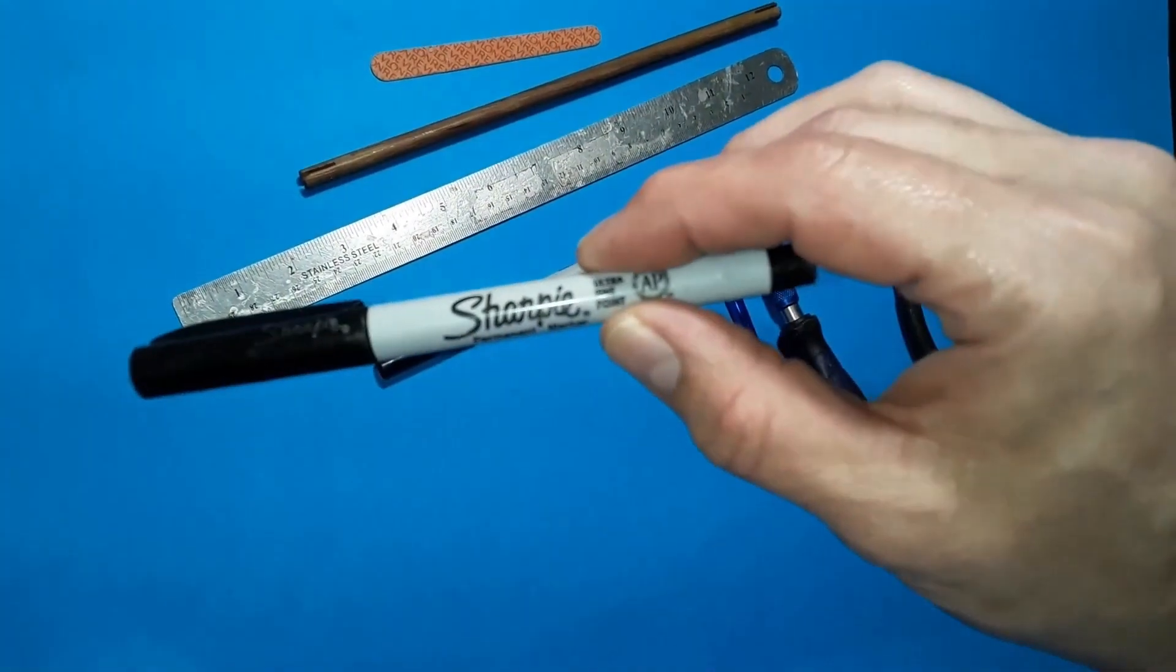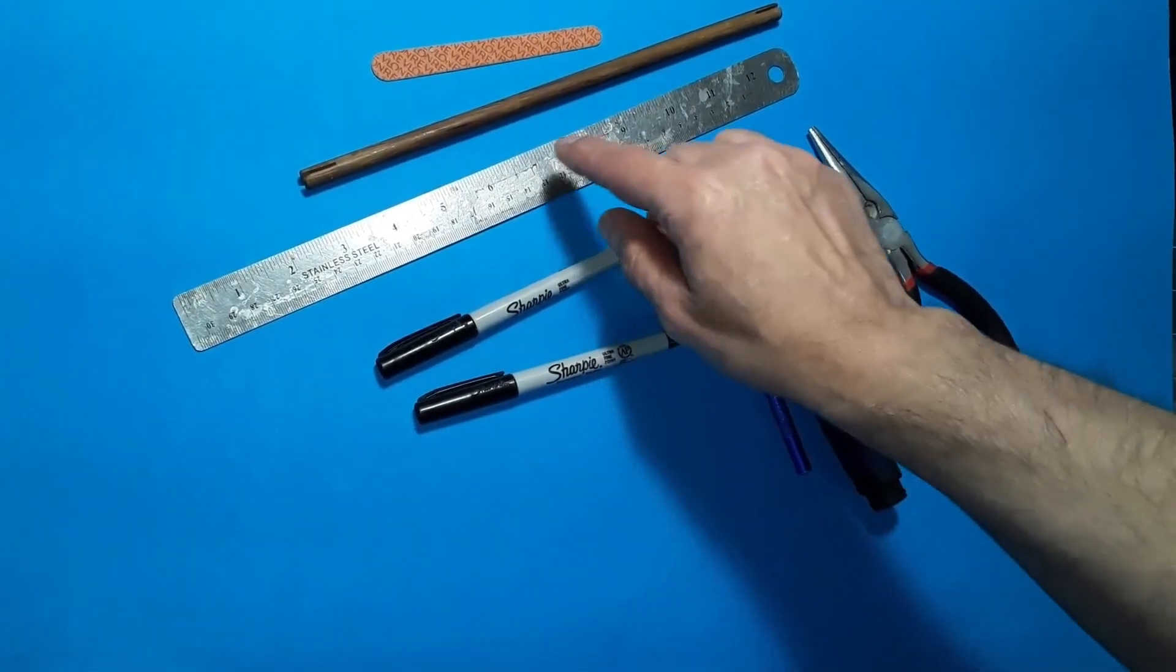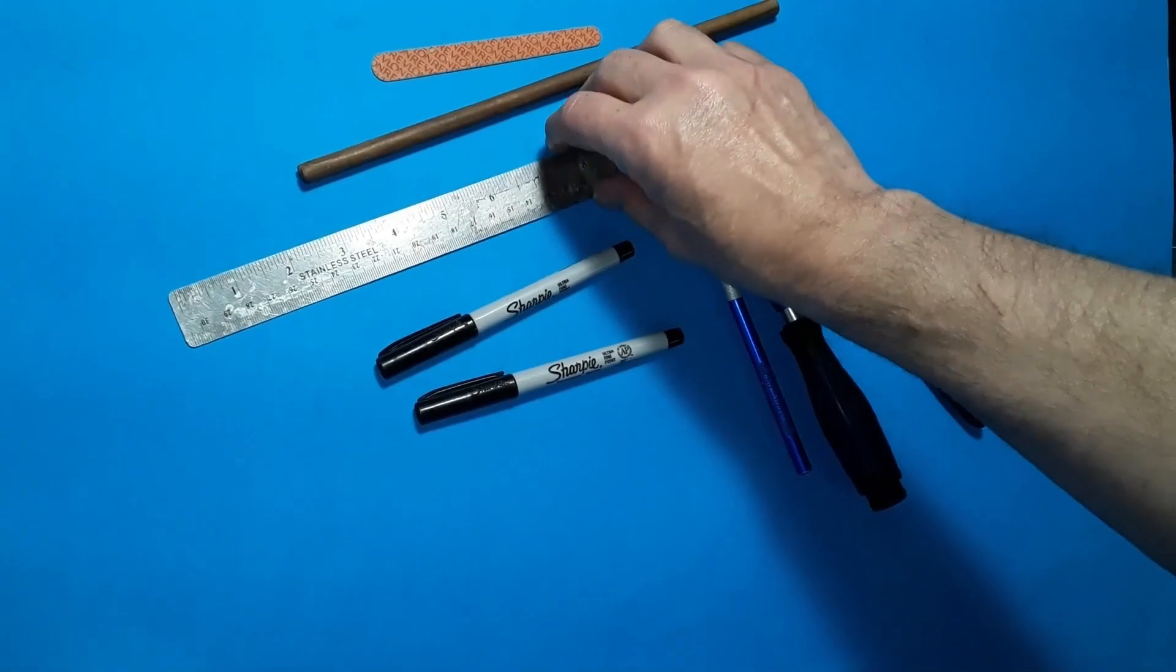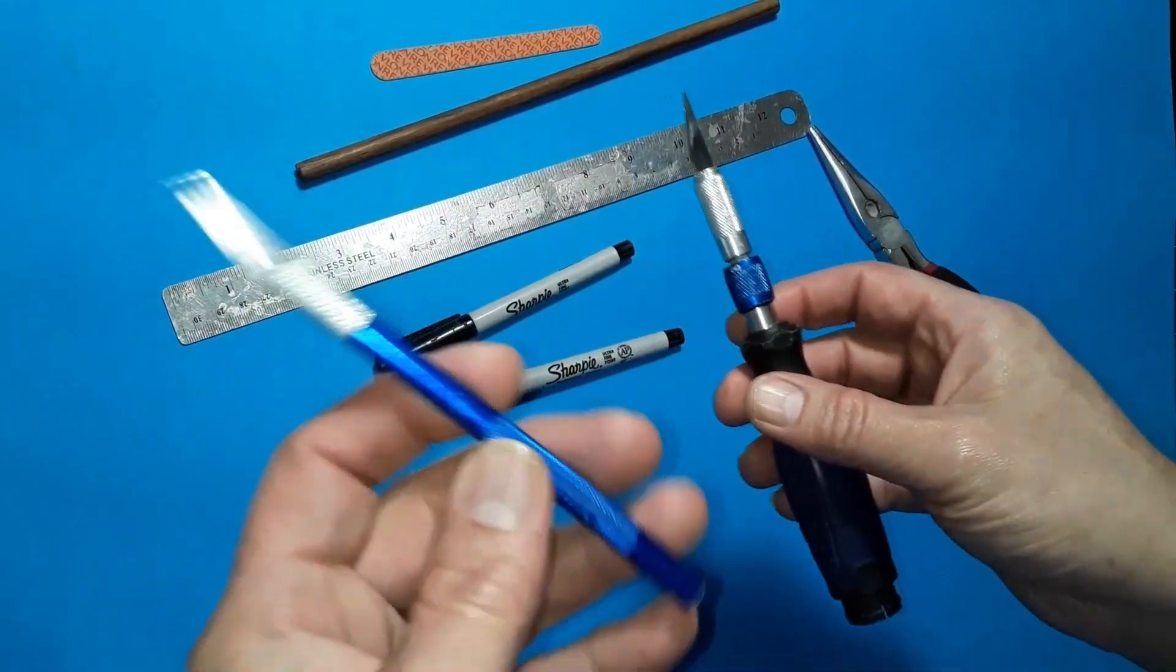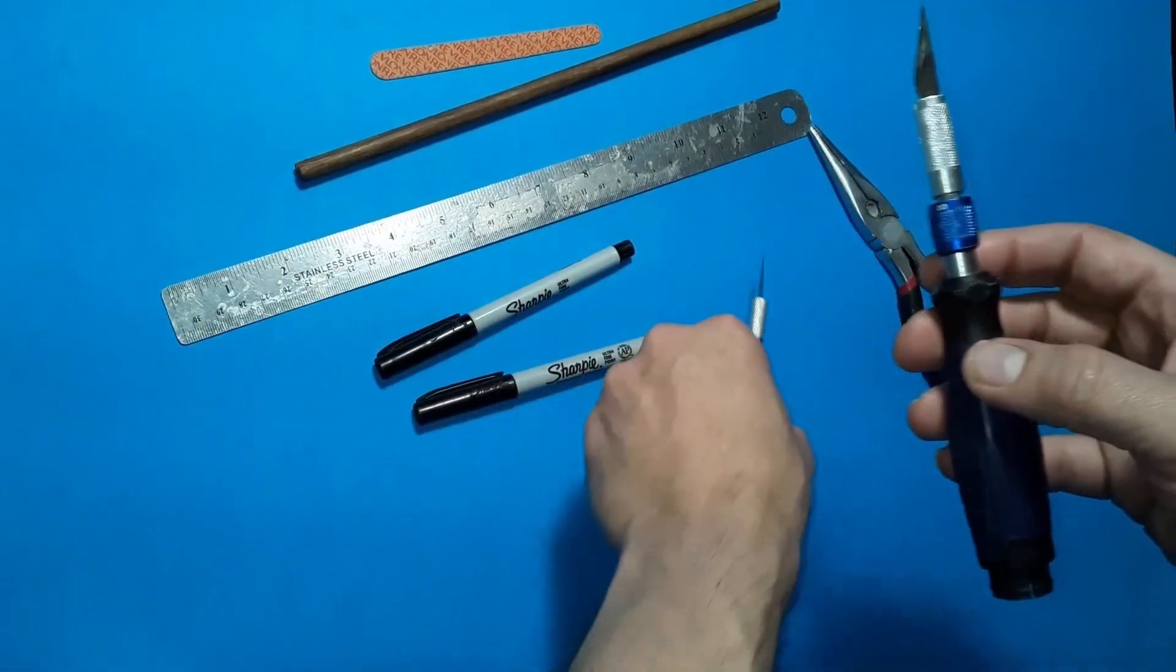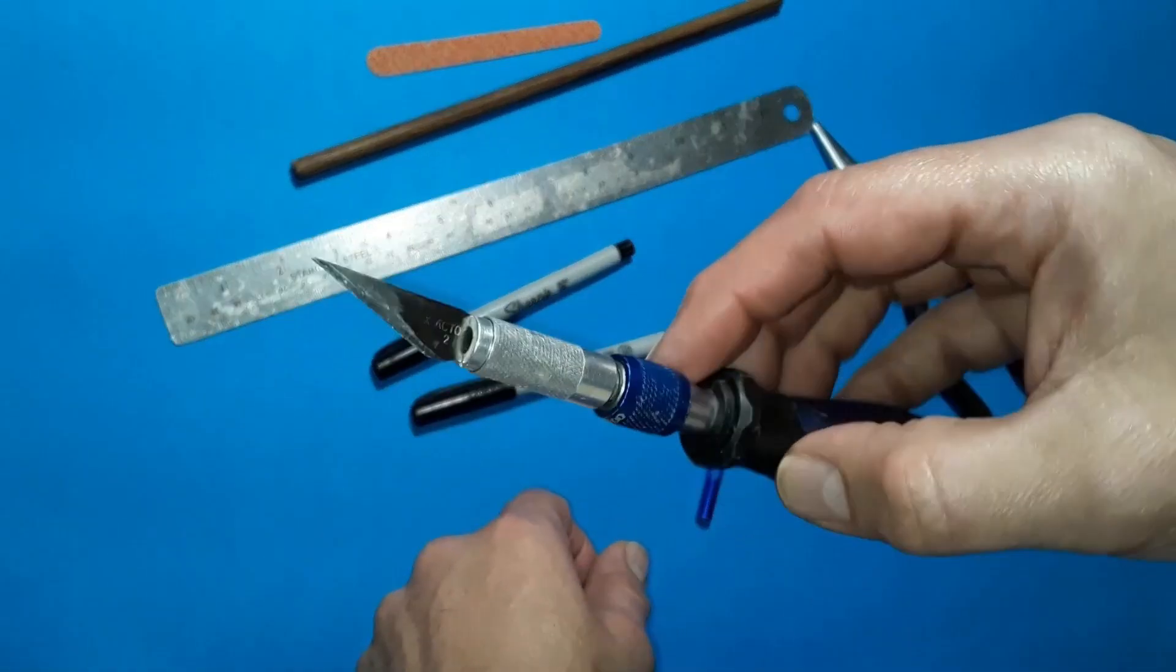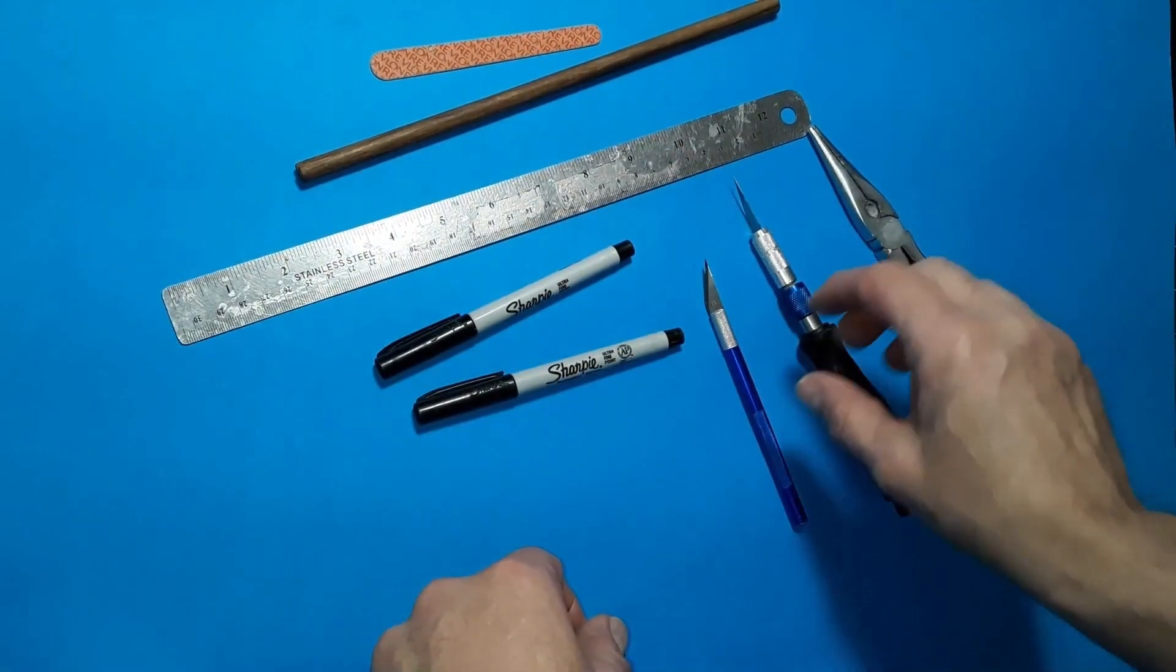Other tools you will need include ultra-fine permanent markers for tracing your parts onto cans. A good stainless steel ruler for making folds and bends, and multiple sizes of hobby blades. The smaller blades will be used for cutting out small details such as canopies, while the larger blade will be essential for making precise cuts in the fuselage and other parts.